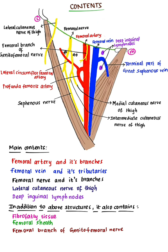In addition to these main structures, it also contains fibro-fatty tissue and the femoral sheath. The femoral sheath encloses the upper 3 to 4 cm of the femoral vessels. It also contains the femoral branch of the genitofemoral nerve, which can be seen here alongside the iliacus.